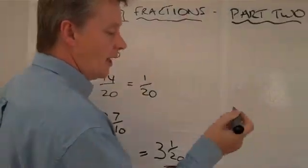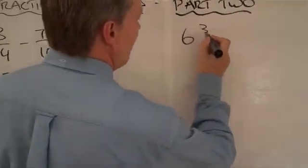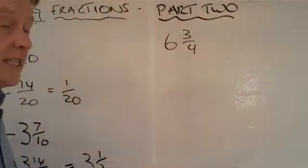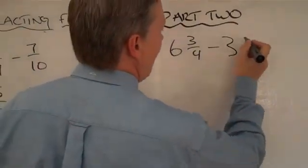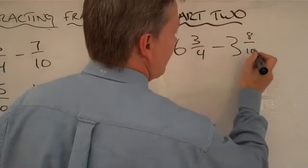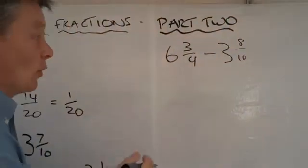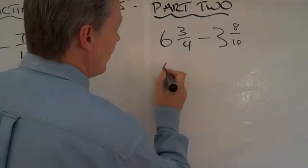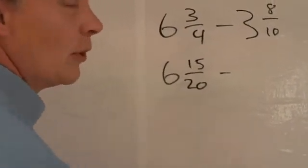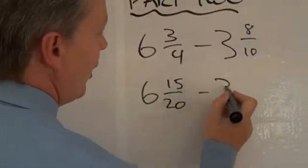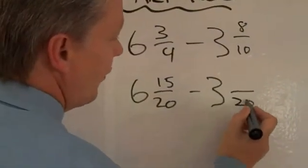So what we're going to say now is six and three quarters take away three and eight tenths. It's going to be a little bit more complicated. But what we can do is we can rewrite it to six and fifteen twentieths, which we already know. Three whole ones and something over twenty.